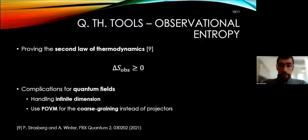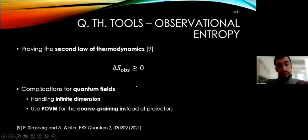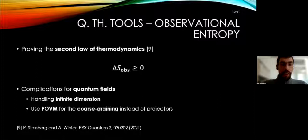Actually, observational entropy has the really good feature that it was also recently shown that it can be used to give a second law of thermodynamics starting from microscopics of quantum theory. But when we try to bring it into quantum fields, there are some complications that we have to address. We have to handle the infinite dimension that we have on quantum fields, which can bring divergences in the observational entropy. And we also need to use POVMs, positive operator valued measurements, to define the coarse-grainings instead of defining projectors, which is the usual way.